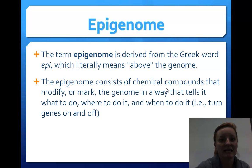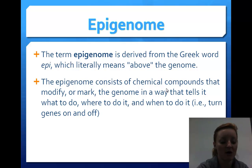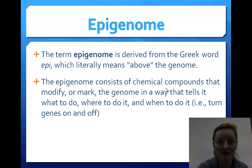Things can happen to your body. The epigenome consists of chemical compounds that modify and mark the genome in a way that tells it what to do, where to do it, and when to do it — like when do you go through puberty? That's the epigenome.